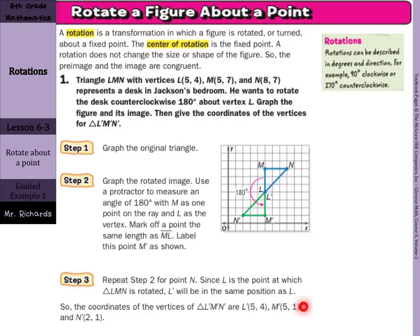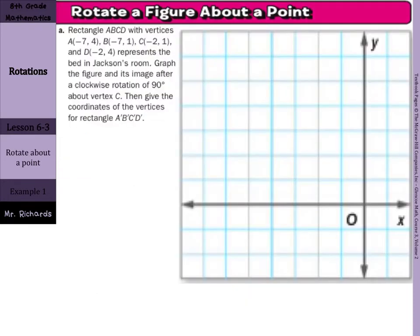And now we're going to try one of these on our own, however, probably without a protractor. Rectangle ABCD with vertices A(-7,4), B(-7,1), C(-2,1), and D(-2,4) represents the bed in Jackson's room. Graph the figure and its image after a clockwise rotation of 90 degrees about vertex C. Then give the coordinates of the vertices for rectangle A'B'C'D'.